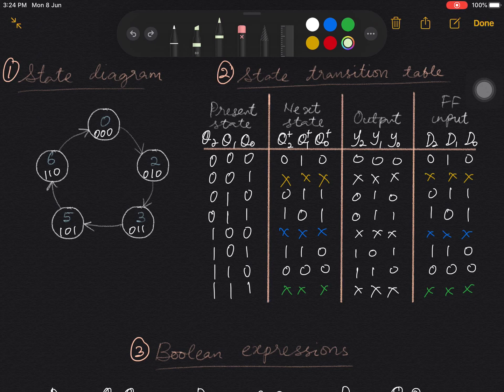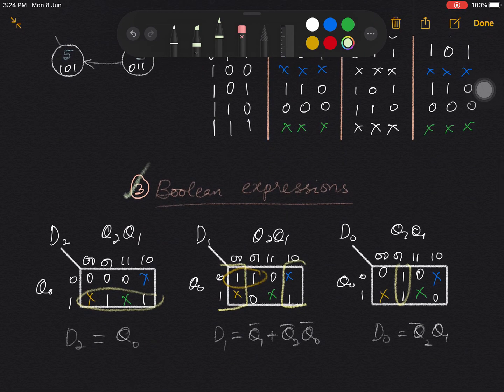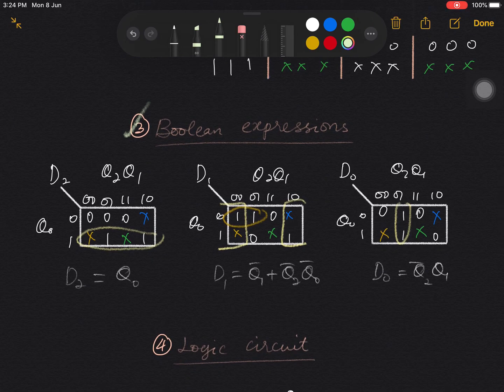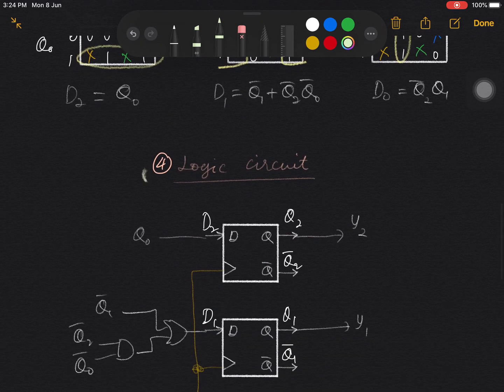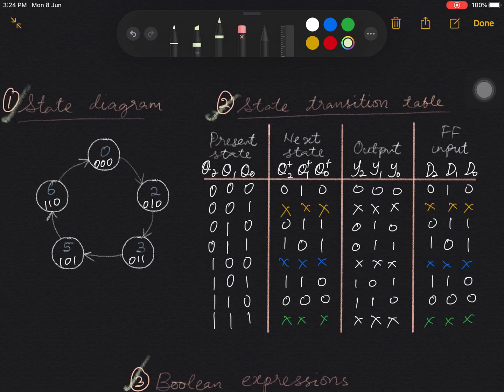And let's see how to identify whether this particular counter is self-starting or not. So here is the state diagram, the state transition table, the Boolean expression that were derived from the K-maps, and the circuits diagram that was built based on the Boolean expression. So here our task is to investigate what will happen to the counting sequence if the initial state is one of the unused states. That is state 1, state 4, and state 7.